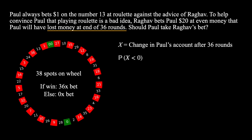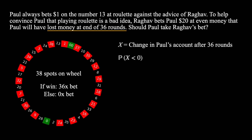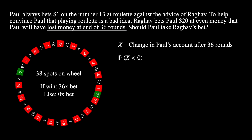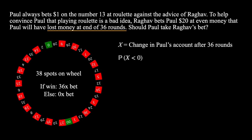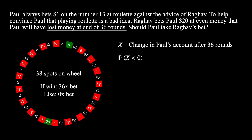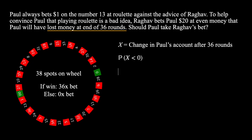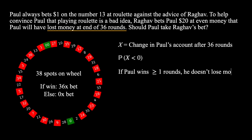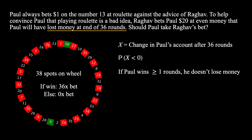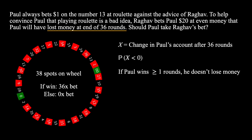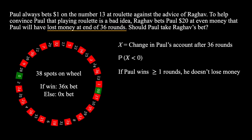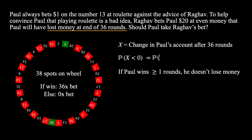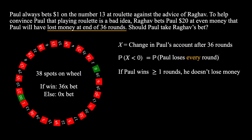We notice that the payoff of winning even one round is $36, and the cost of playing all 36 rounds with $1 bets is $36. Therefore, if Paul wins even one of the rounds, he doesn't lose money. Thus, finding the probability that x is less than 0 is equivalent to finding the probability that Paul loses every single round he plays.